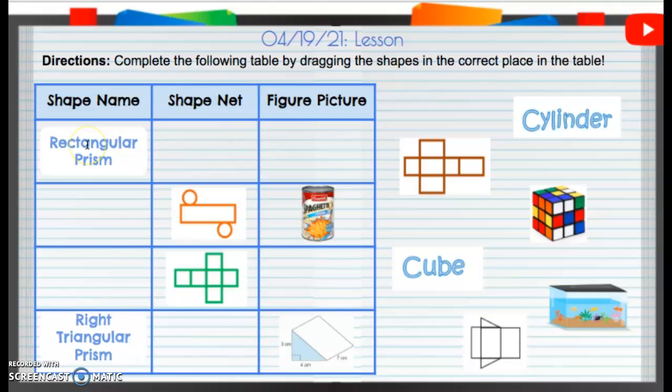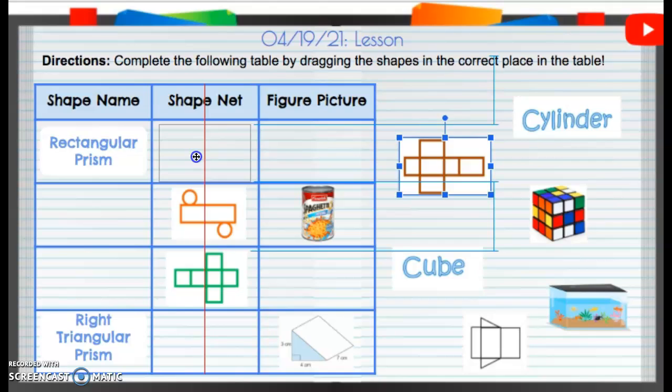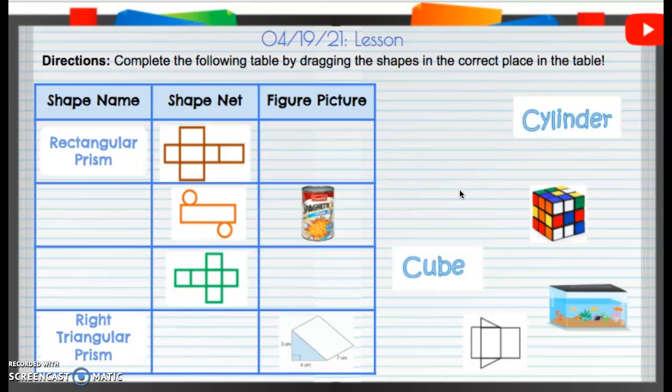Rectangular prism. First off, I know rectangular prism. I know rectangle is in there, so it's going to be something with a rectangle. The net is going to be when you unfold a rectangular prism. A rectangular prism is going to be this net. That net has all rectangles, and when you fold it up, it kind of looks like a tissue box or a fish tank. Our picture is going to be that little fish tank. That's what a rectangular prism looks like.